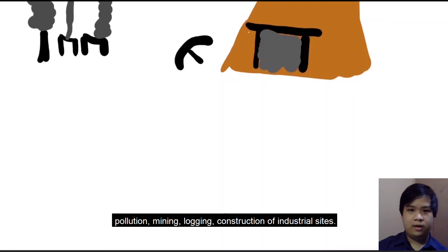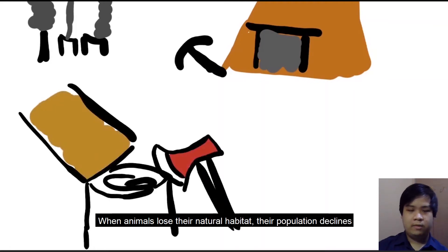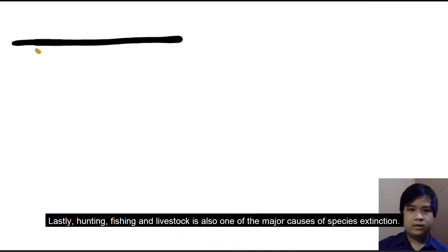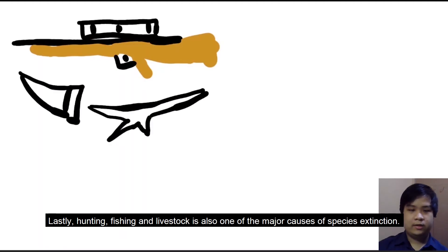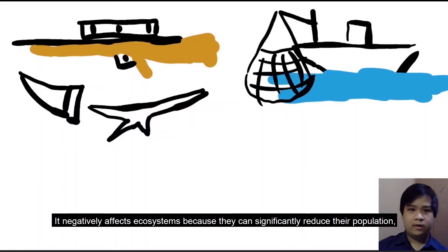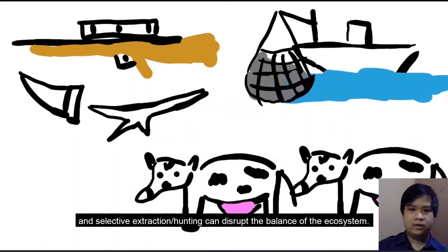The destruction of habitats can be caused by pollution, mining, logging, and construction of industrial sites. When animals lose their natural habitat, the population declines and eventually becomes extinct. Hunting, fishing, and livestock is also one of the major causes of species extinction. It negatively affects the ecosystem because it can significantly reduce their population, and selective extraction or hunting can disrupt the balance of the ecosystem.